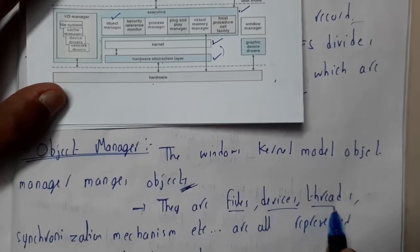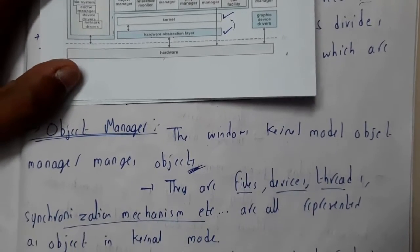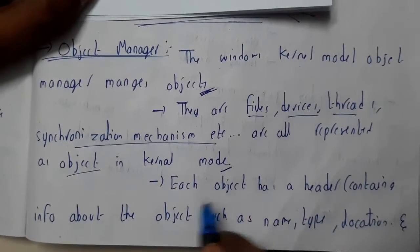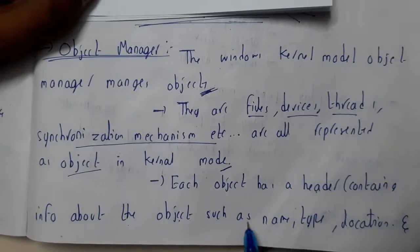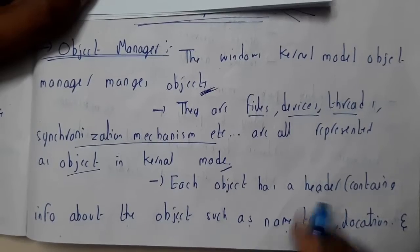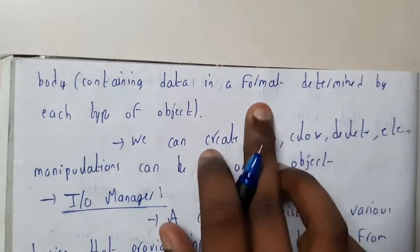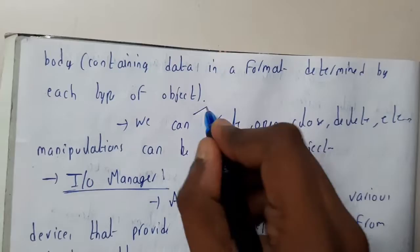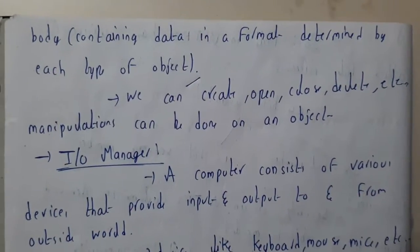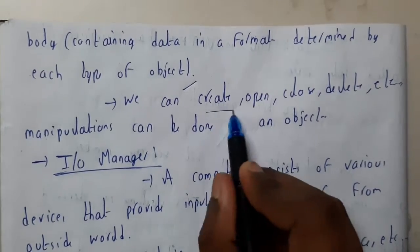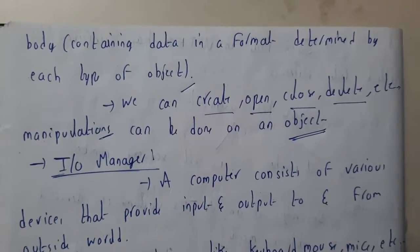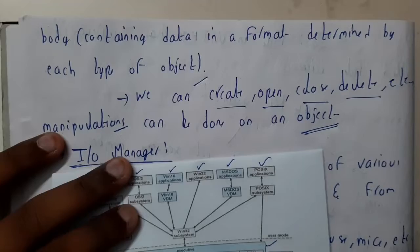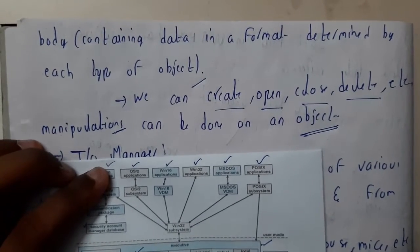The objects are files, drivers, threads, and synchronization mechanisms represented as objects in the kernel model. Each object has a header containing information about the object like name, type, and location. The body contains data in the format described by each type. We can create, open, close, delete, etc. - these are manipulations that can be done on objects.